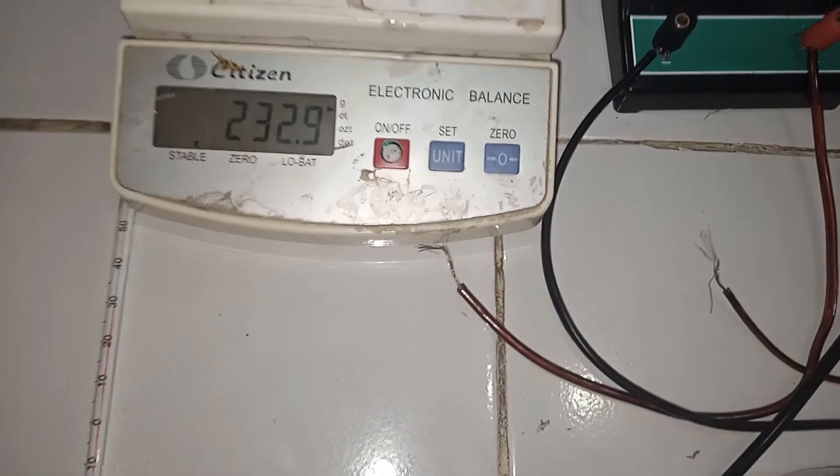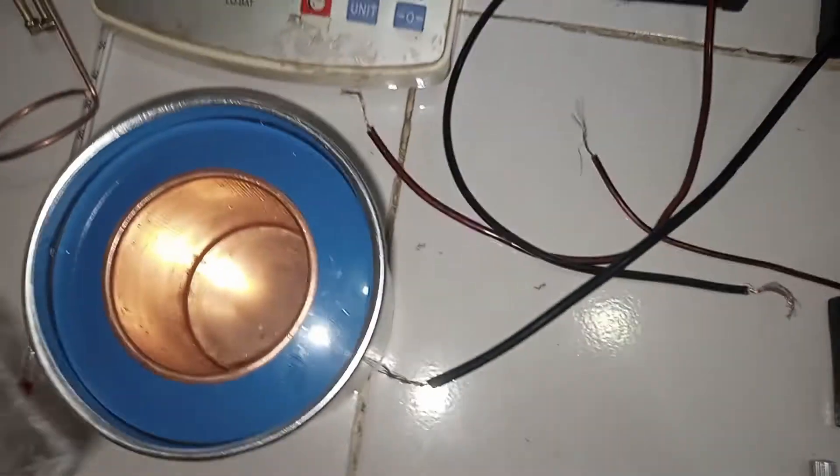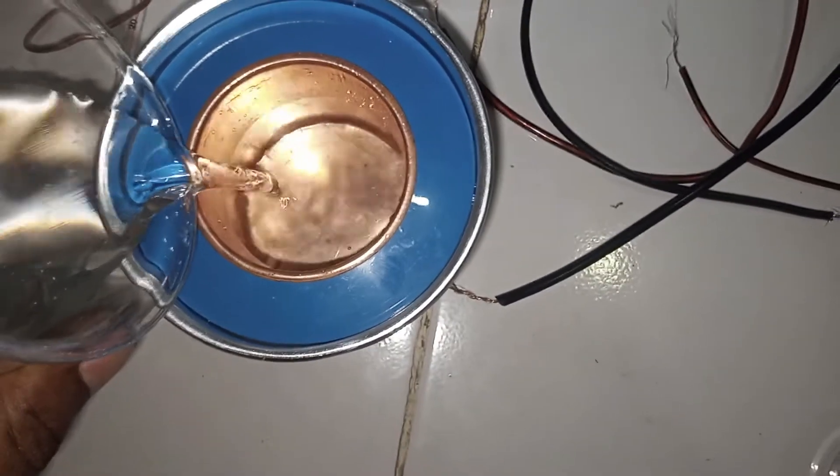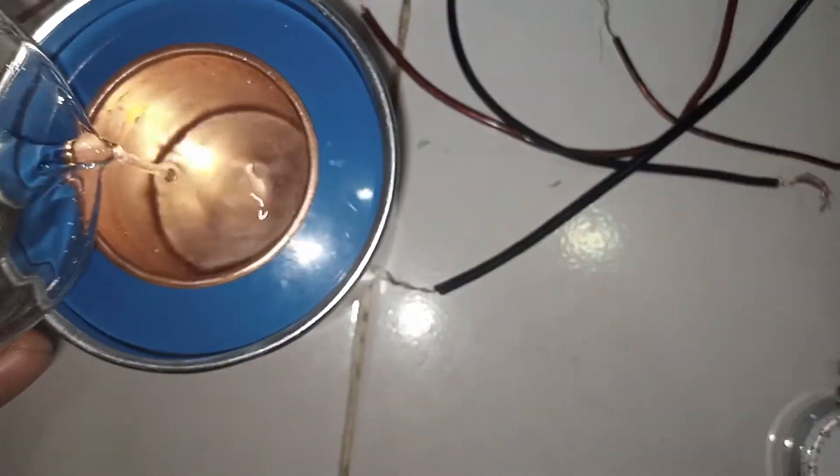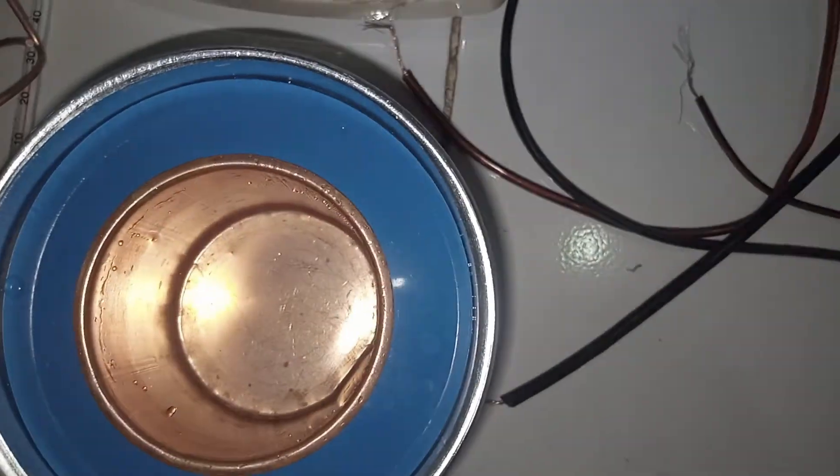So let us pour water up to two thirds. Here we remove the lid and then we'll pour water here. We pour water up to two thirds of the calorimeter. So here we have water up to two thirds at the moment.